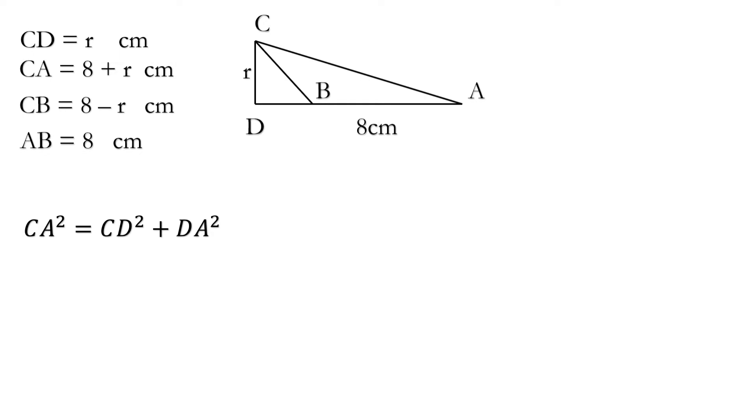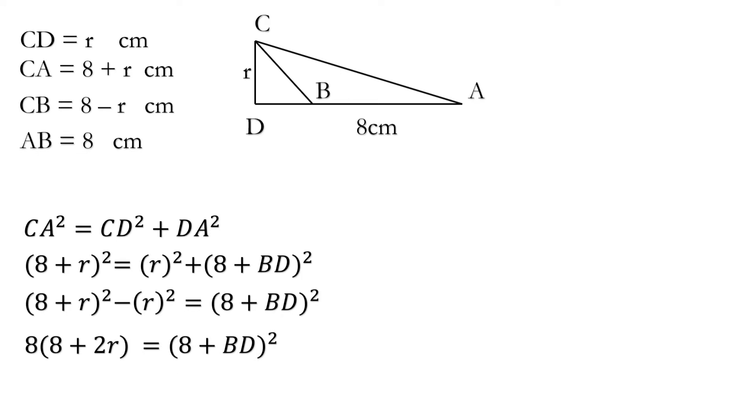Putting the values accordingly we have 8 plus R whole square is equal to R square plus 8 plus BD whole square. Now on solving we get 8 plus R square minus R square is equal to 8 plus BD whole square.